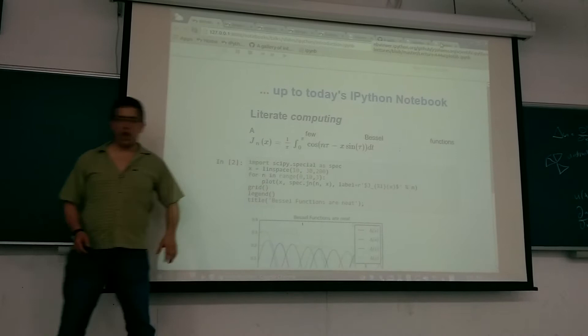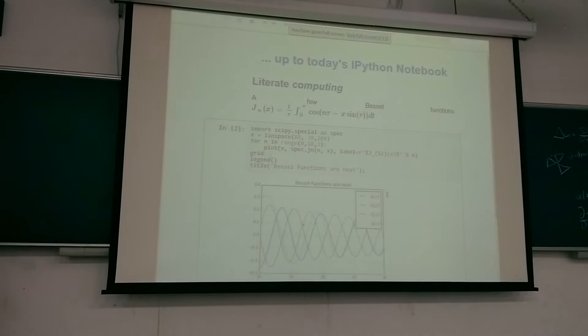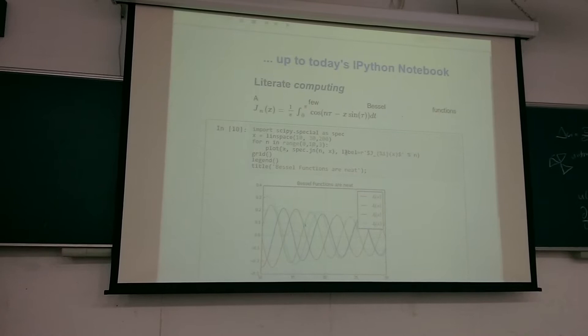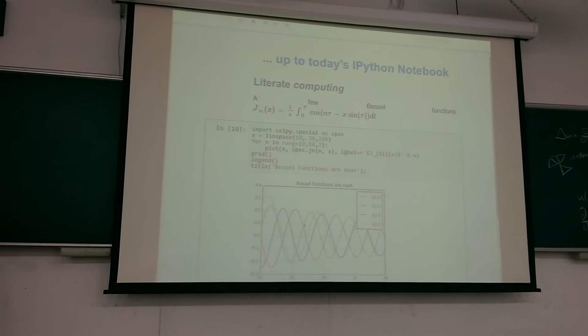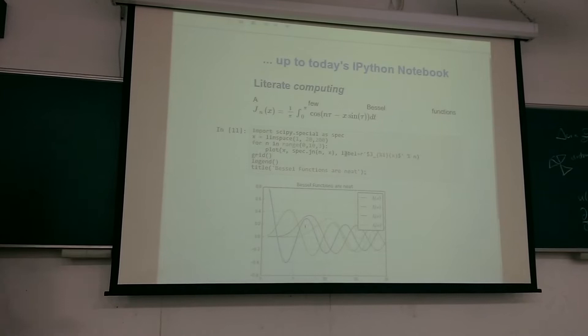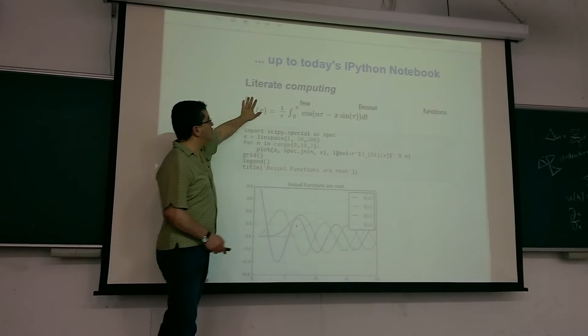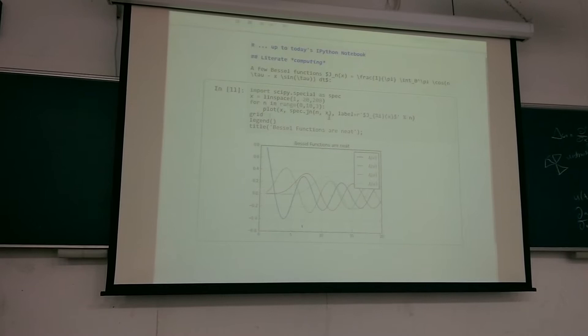I actually have live code in here and I can run it. I can change this — it's a plot of Bessel functions — and I can say I want to plot them between 1 and 20 instead of between 10 and 30, and it will rerun the code. This is actually executing code and I'm getting the results out. I can also type text and have mathematics in there.